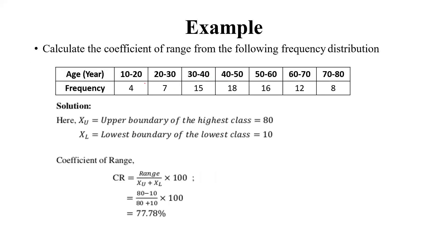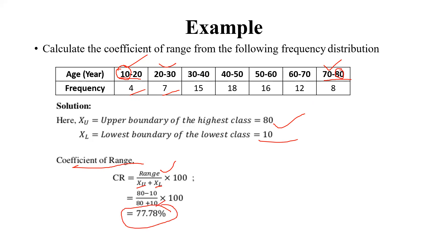We have one example. If the age in years is given as classes from 10–20, 20–30, up to a maximum of 70–80, then 10–20 is the lowest class interval and 70–80 is the highest class interval, with frequency given for each class interval. The upper boundary of the highest class is 80 and the lower boundary of the lowest class is 10. Applying the coefficient of range formula — range divided by (upper boundary of highest class plus lower boundary of lowest class) — we calculate and find 77.78%, which is the coefficient of range.